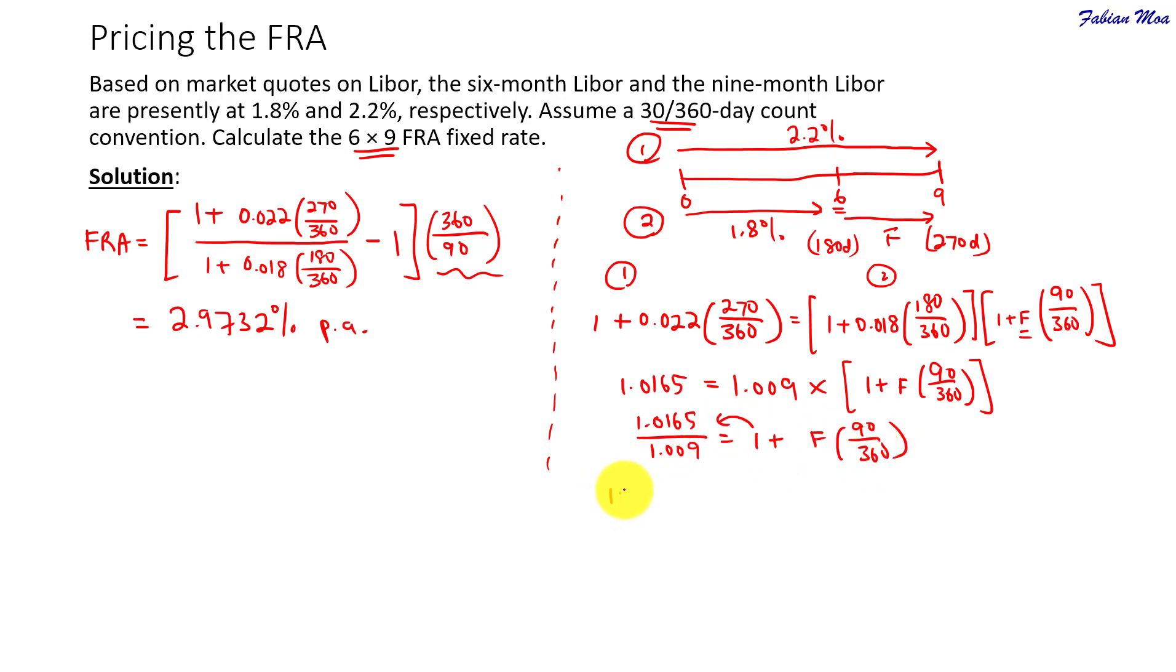Okay, so then we'll move 1 over. So, it becomes 1.0165 over 1.009 minus 1. Okay, so that's equals to F over 90 over 360.